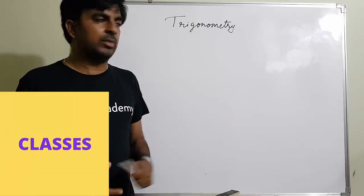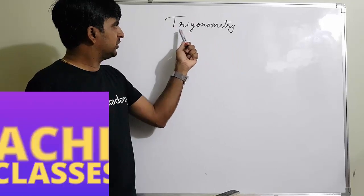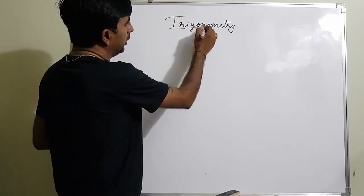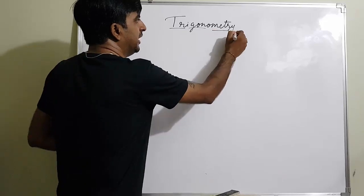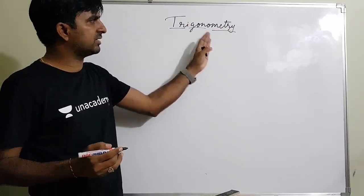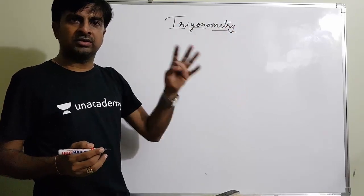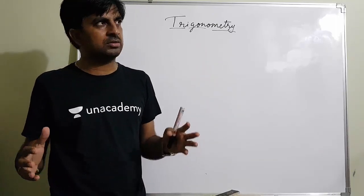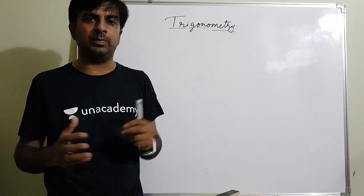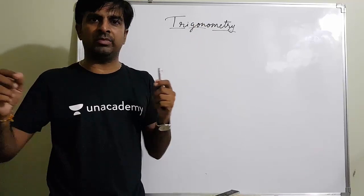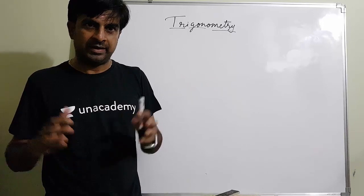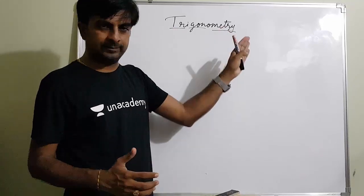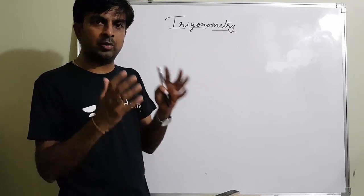Hello friends, today we are going to study about trigonometry. Trigonometry is a Greek word — 'tri' means three, 'gon' means side, and 'metry' means measurement, so this is all about three-side measurement. This branch came into existence because our ancestors wanted to find the distance between stars and planets, which could not be measured with a measuring tape, so a new branch of mathematics was introduced: trigonometry.